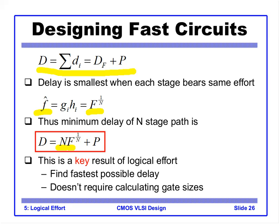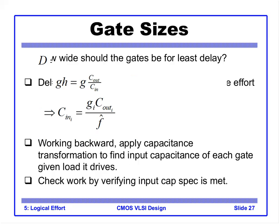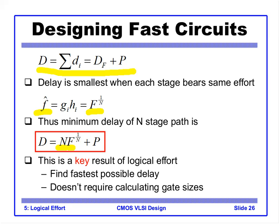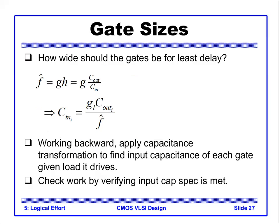This is the most important result: the minimum delay formula N·F^(1/N) + P enables us to find the fastest possible delay without even calculating gate sizes. The second step is calculating gate sizes: since the stage effort f_i = g_i · (C_out / C_in), we get C_in = g_i · C_out / f̂, where f̂ is the best stage effort. Working backwards from the output, we can find the input capacitance of each stage.